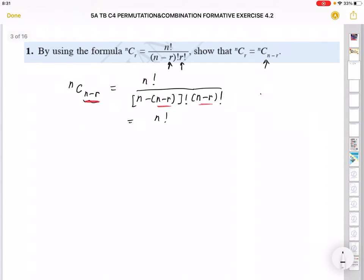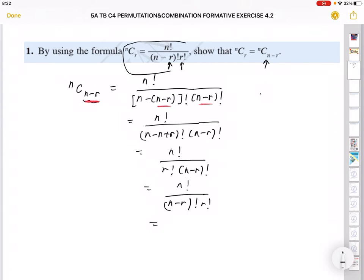The moment you subtract, what happens? n minus n. This will be n! over (n-r)! times r!. The n and n cancel each other off. Notice that we can actually interchange this and write (n-r)! first, followed by r!. And this answer is actually the same as this formula here, which is nCr, which is the same as your left-hand side.